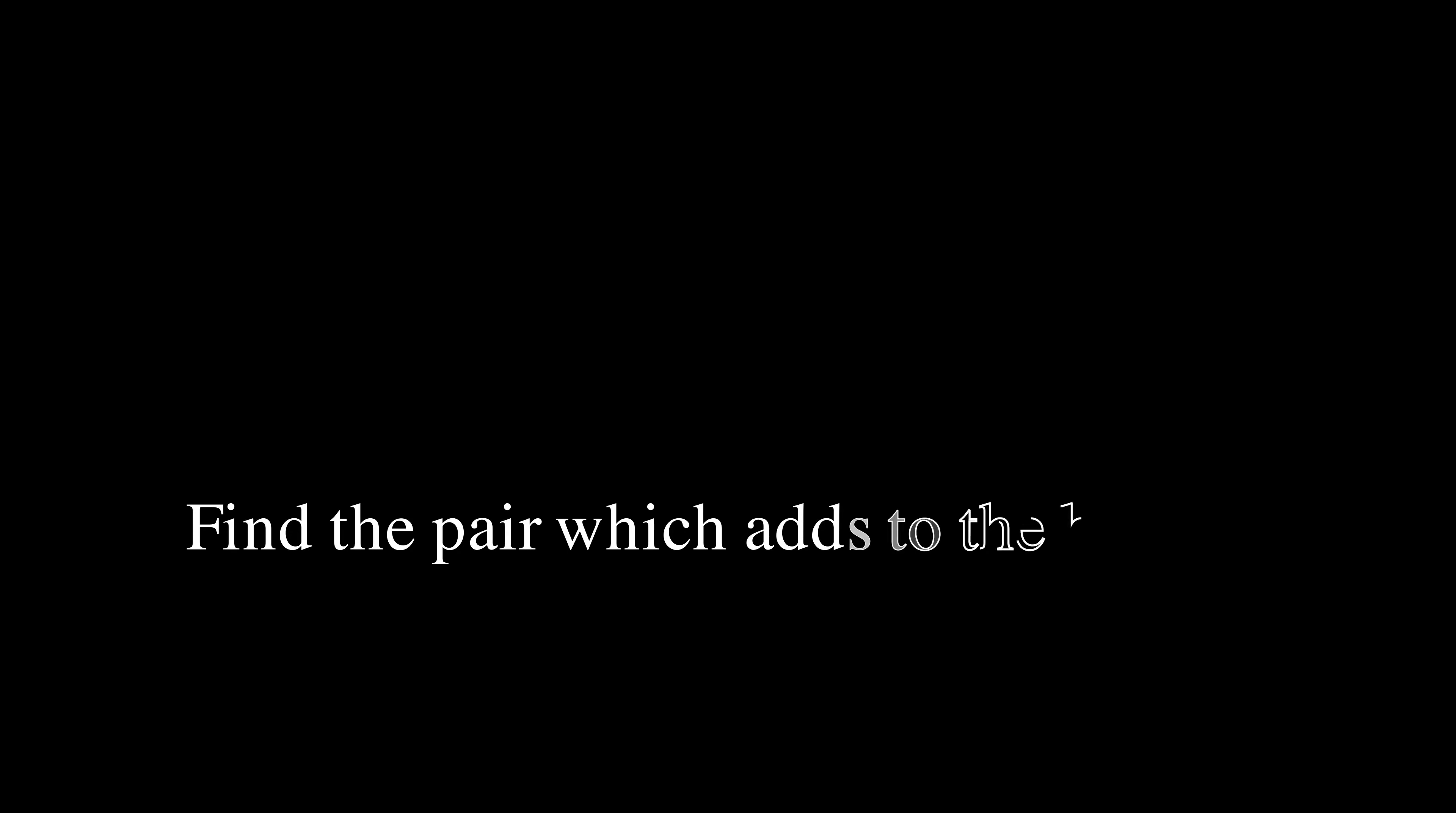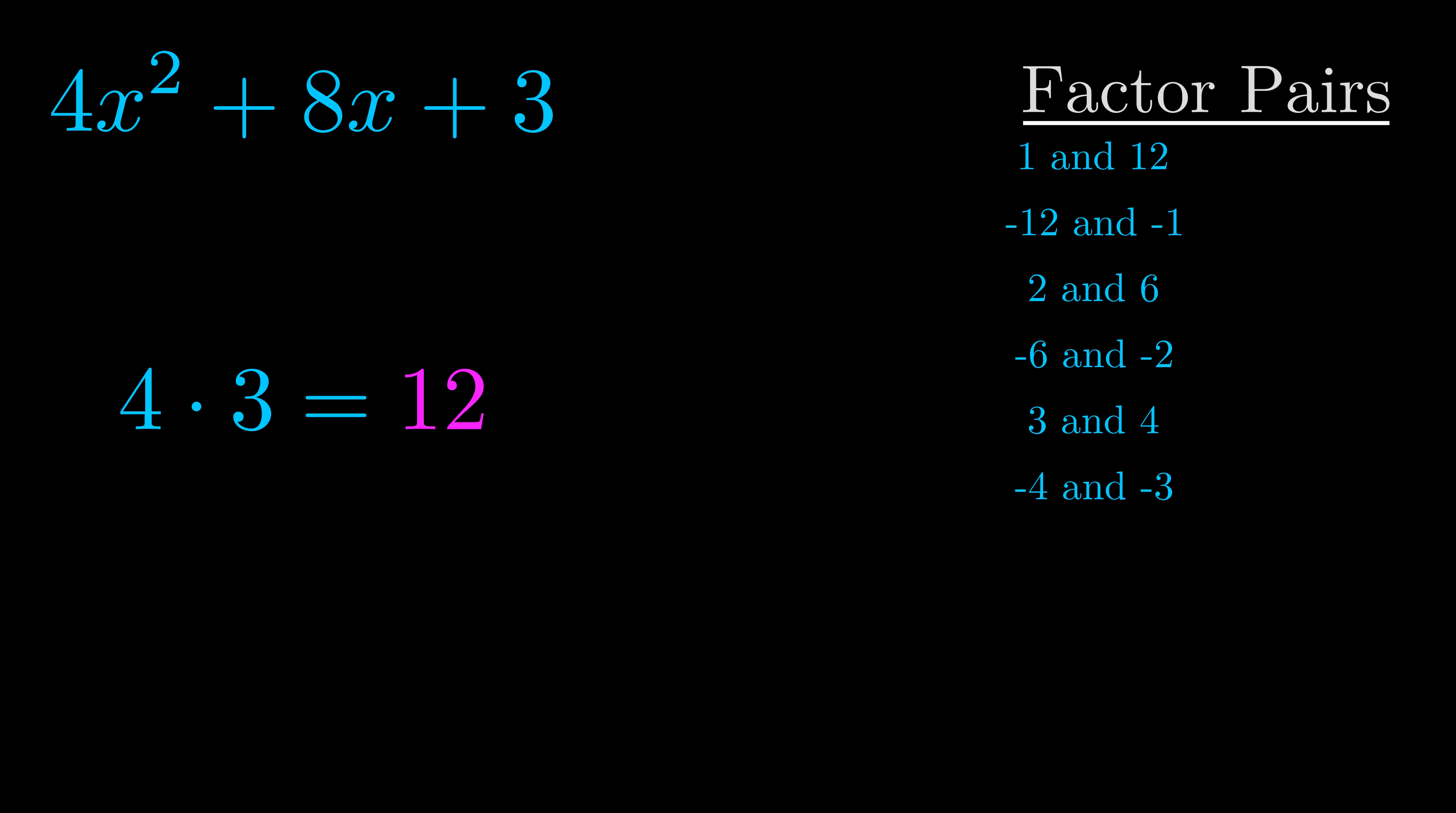The b value is the coefficient on the x term. That's the middle term, the one that we haven't done anything with yet. And really this is the only factor pair that we need.